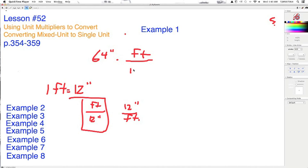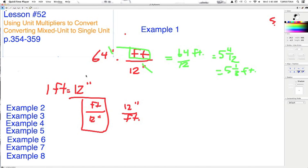Because now, we know that this unit will cancel this unit. And all we have left is feet. So if we look now, we have 64 divided by 12 feet, which is 12 goes into 64, 5 with 4 left over, which reduces to 5 and 1 third feet. So 64 inches is 5 and 1 third feet.